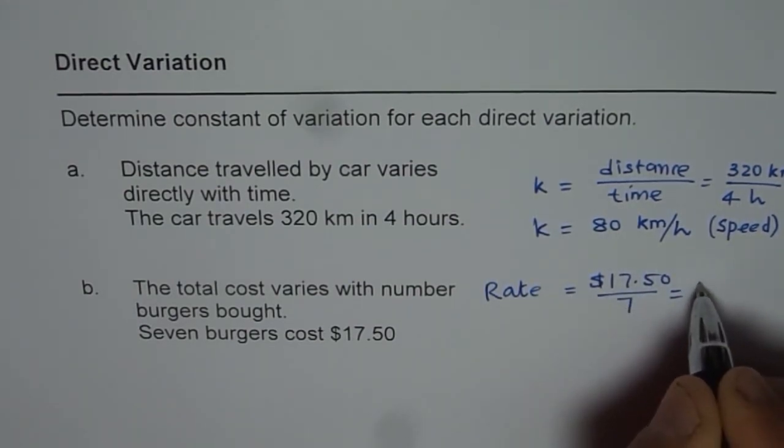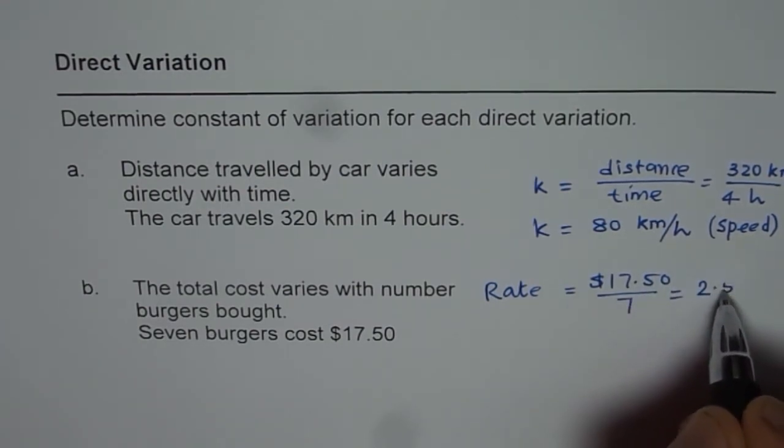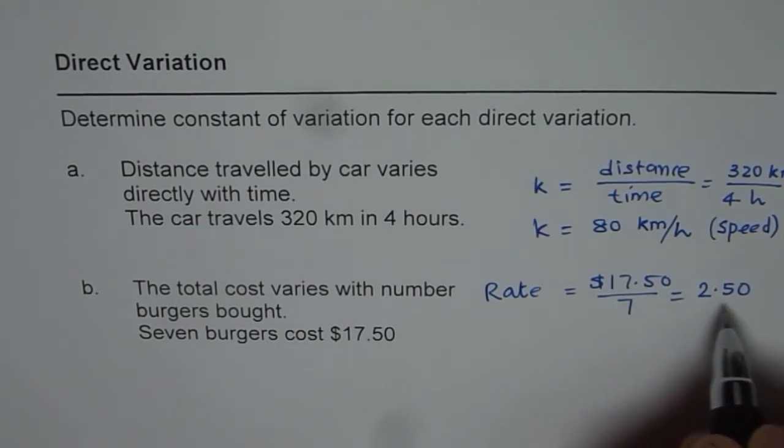So, when you do that, you get 7 times 2 as 14, 35, 7 times 5. So, $2.50, that is the rate in this particular case and that is the constant we are talking about.